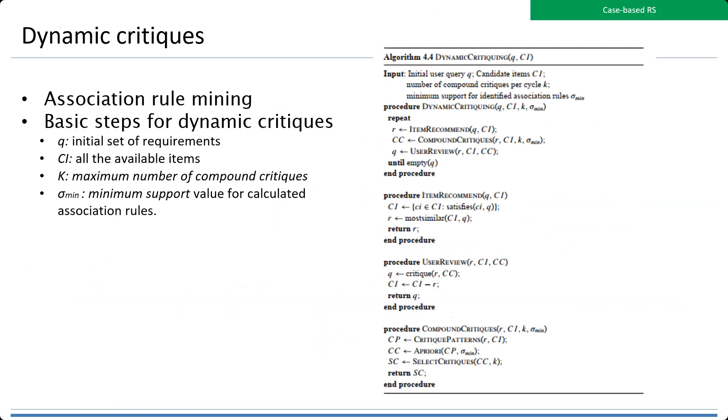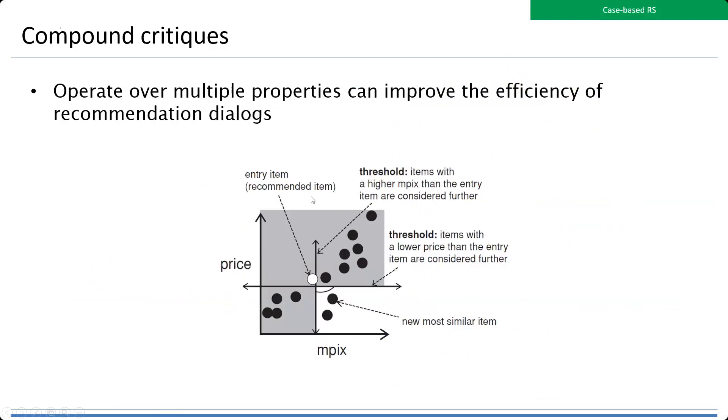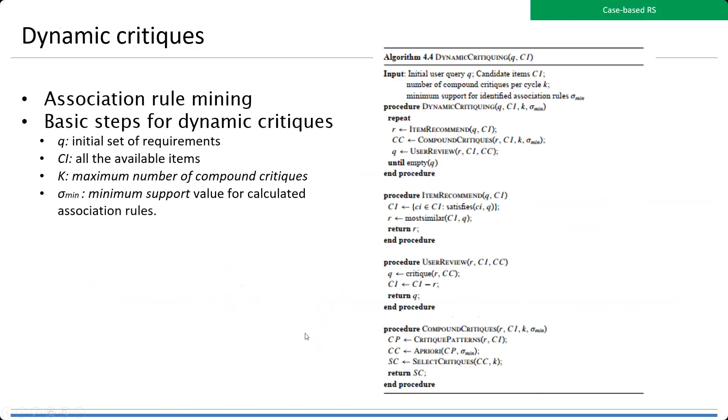The compound critic operates over multiple properties, which can improve efficiency of recommendation. If I have the price and the limit for the pixel, based on the requirement, the most similar item will be found. Dynamic critic means you need to find what available items exist based on some requirements, and find the maximum number of compound critics.